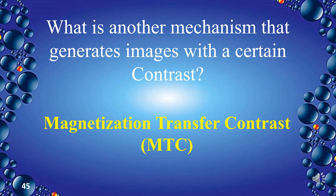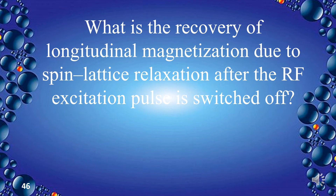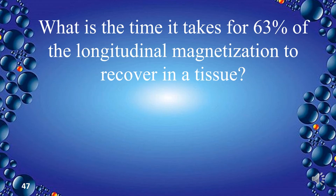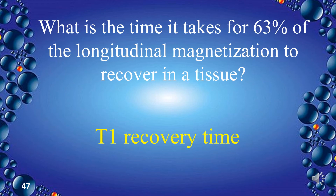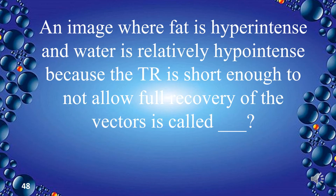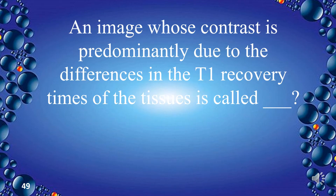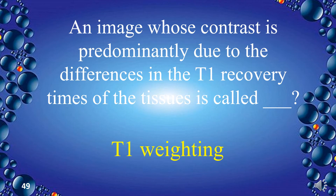The recovery of longitudinal magnetization due to spin lattice relaxation after the RF excitation pulse is switched off is called T1 recovery. The time it takes for 63% of the longitudinal magnetization to recover in a tissue is T1 recovery time. An image where fat is hyperintense and water is relatively hypointense because the TR is short enough to not allow full recovery is called T1 contrast. An image whose contrast is predominantly due to differences in T1 recovery times is called T1 weighting.